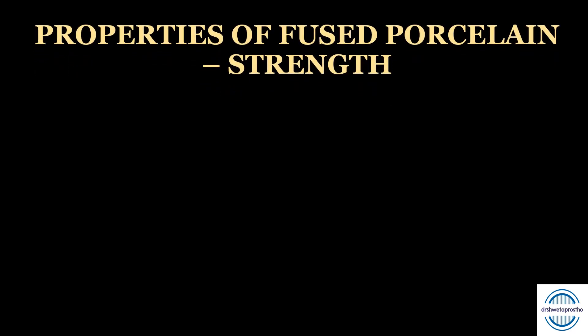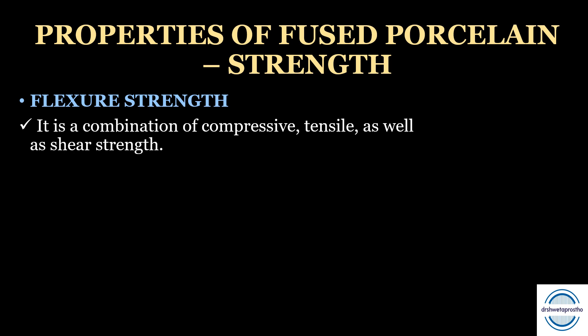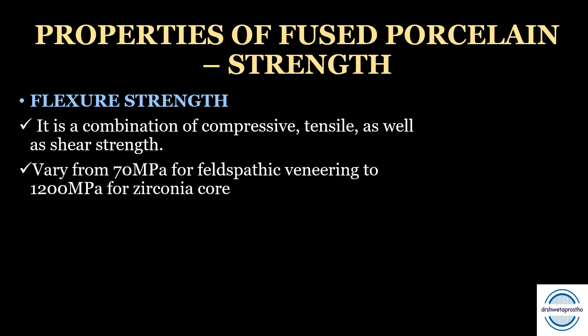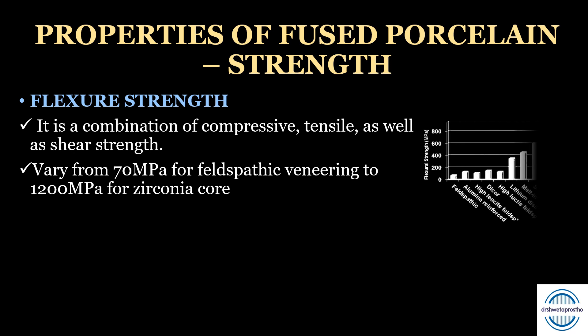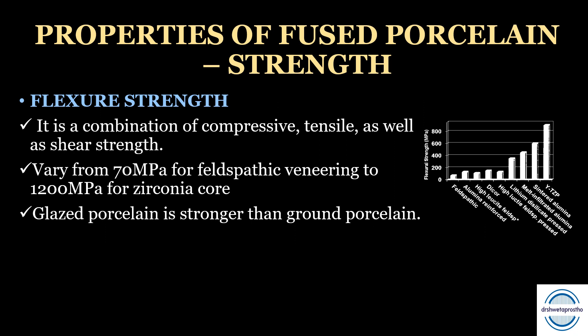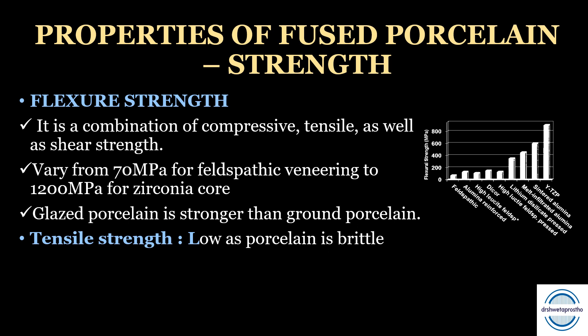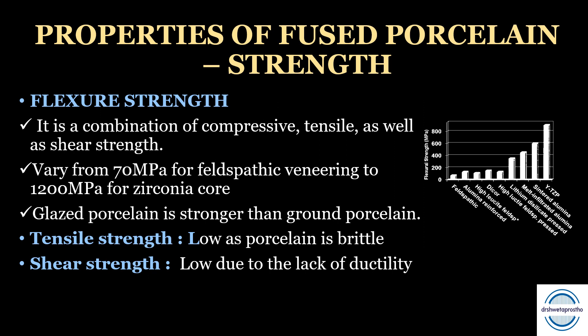Next are the properties of fused porcelain. The first property is strength. Early porcelains were weak and brittle, tending to break easily. Current porcelain systems have considerably improved in strength and toughness. Flexural strength — a combination of compressive, tensile, and shear strength — may vary from 70 MPa for feldspathic veneering porcelain up to 1200 MPa for zirconia core ceramics. Glazed porcelain is stronger than ground porcelain. Tensile and shear strength are both low due to the brittle nature and lack of ductility.